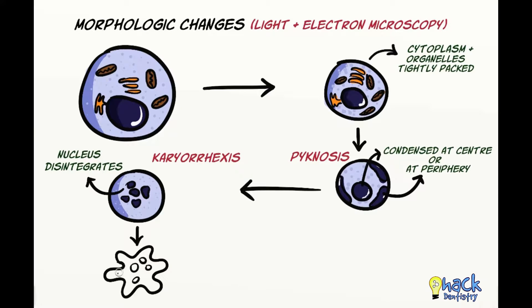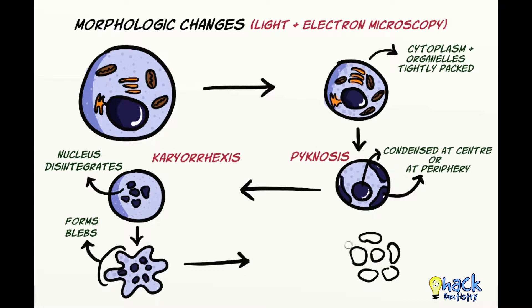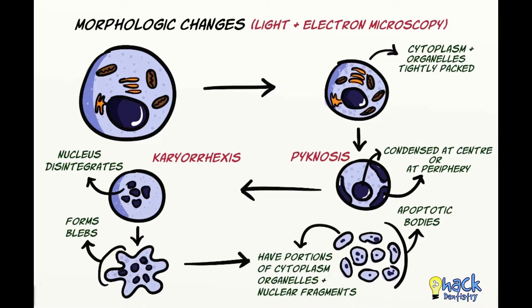The cell starts to form blebs on its surface and starts to break off into small fragments called apoptotic bodies. These apoptotic bodies have portions of the cytoplasm, organelles and also nuclei fragments of the cell.